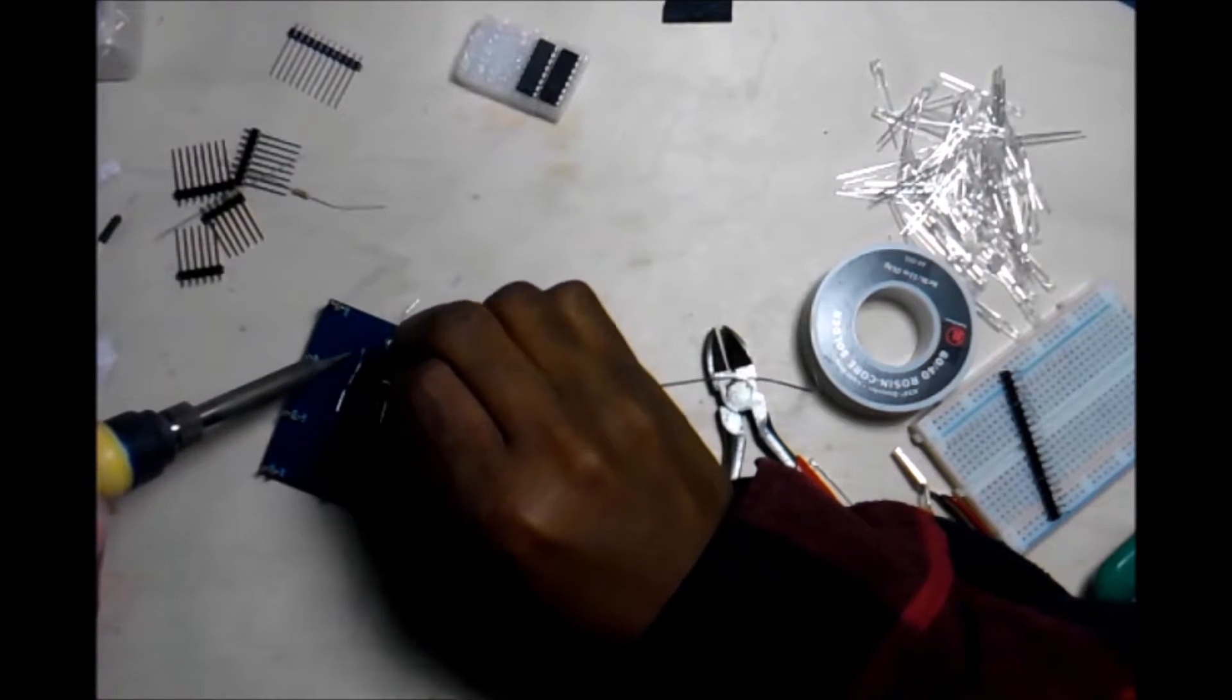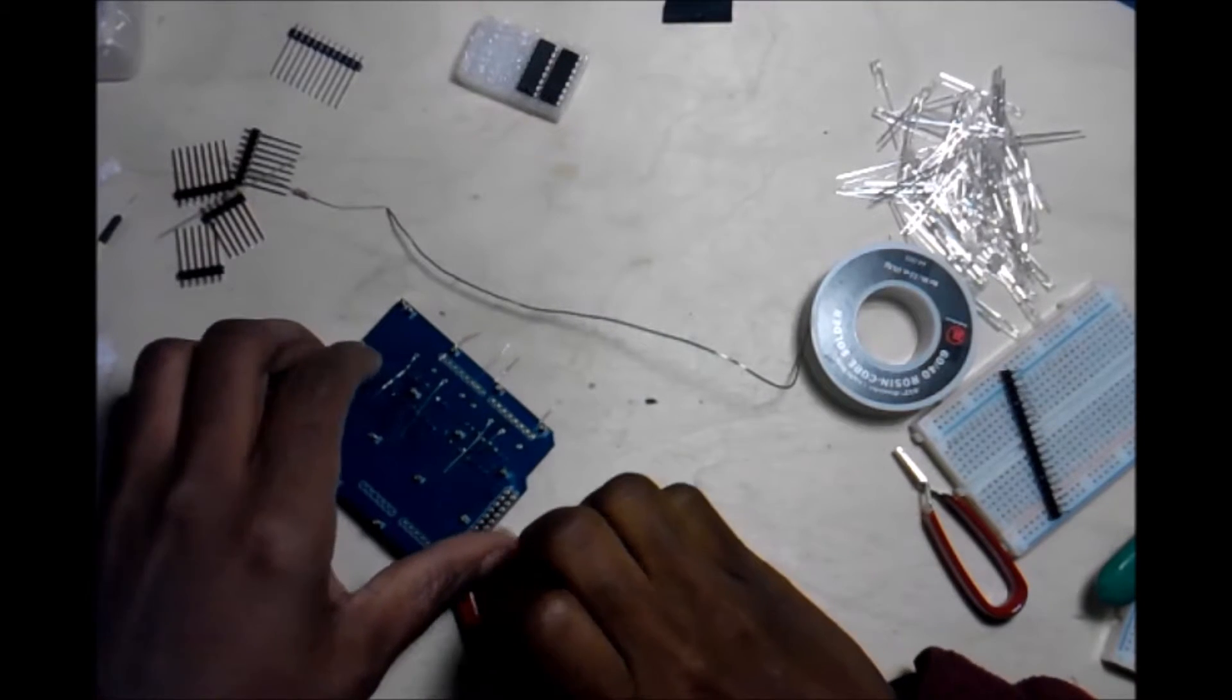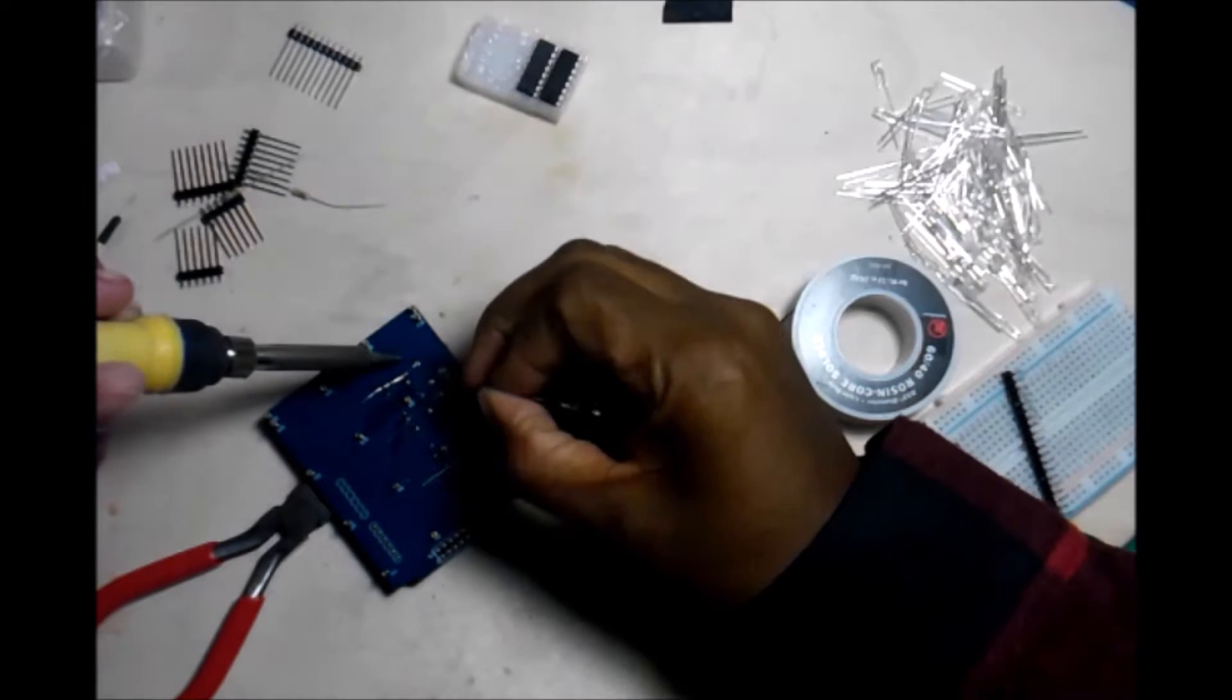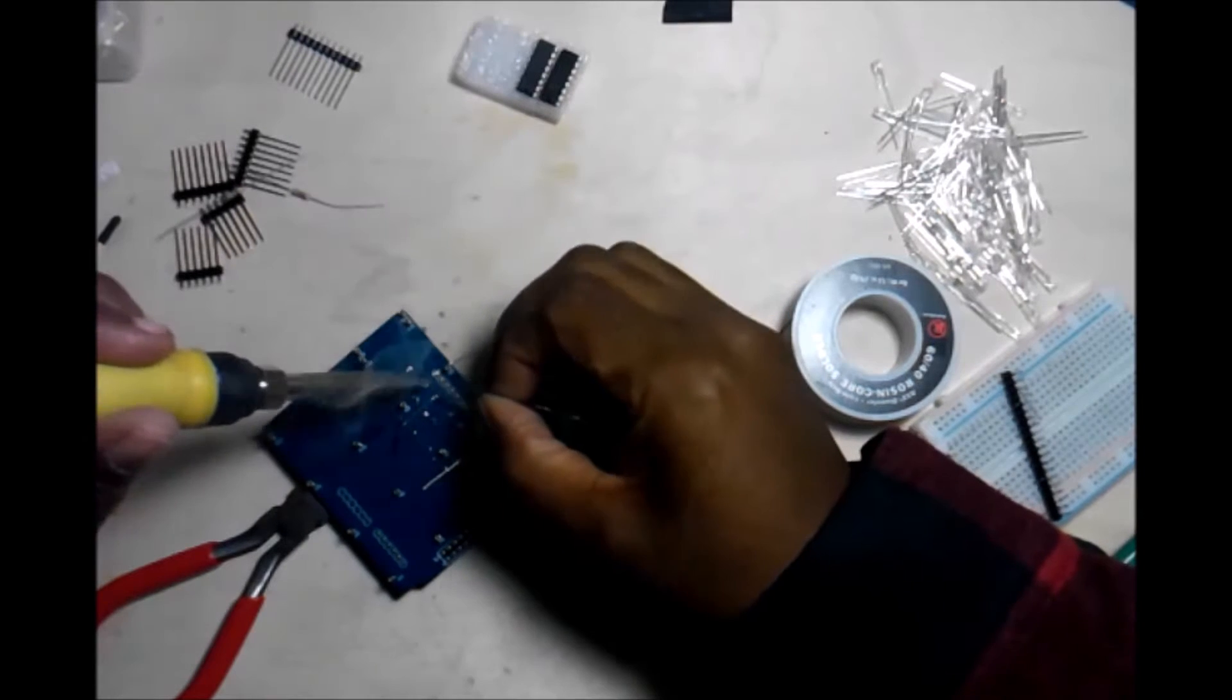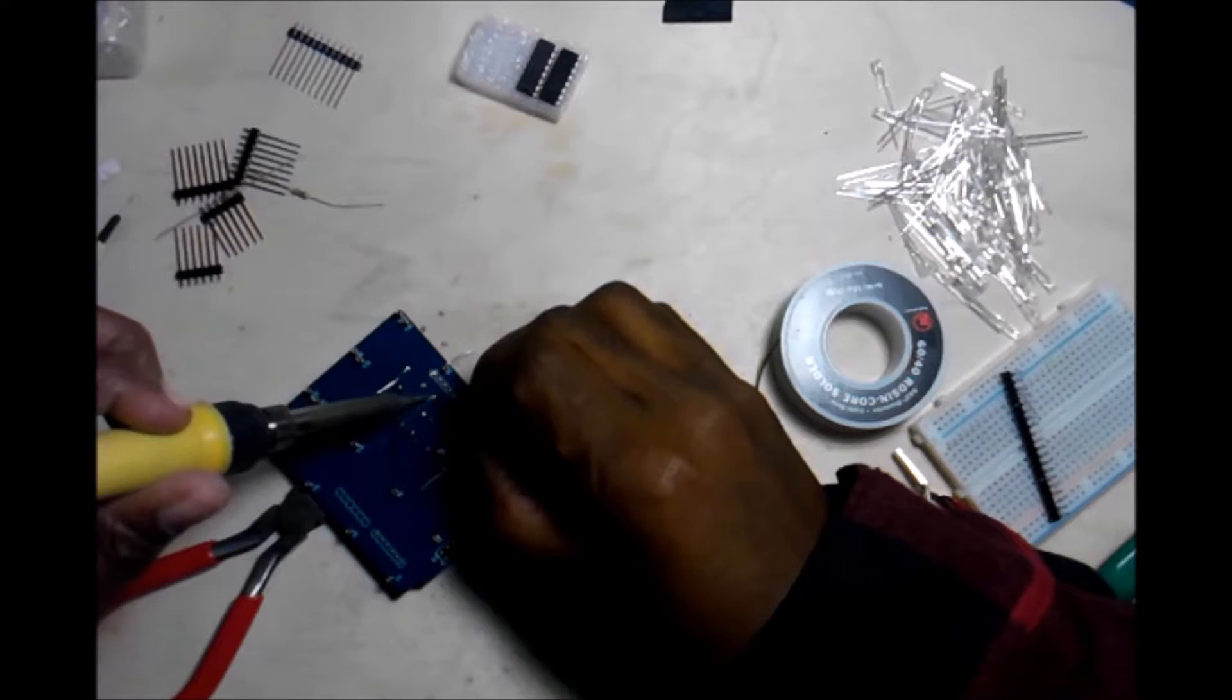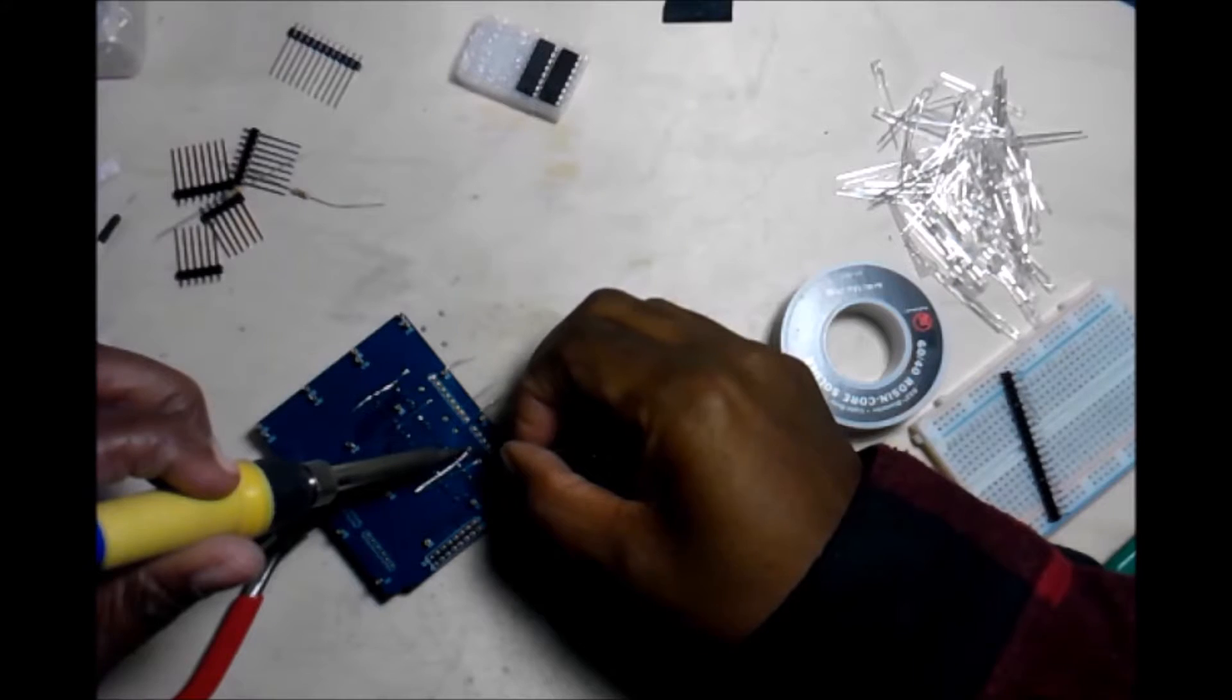And you just, if you can get it to stop wobbling... I could use the helping hands right now. And you just heat up the lead, apply the solder. Clean off my tip. Heat up the lead, apply the solder. Oops. Heat up the lead, apply the solder.